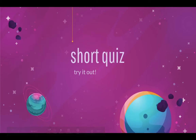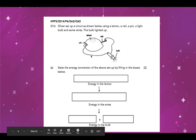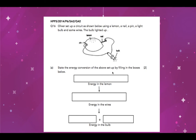Here's a short quiz. Oliver set up a circuit using a lemon, a needle, a pin, a light bulb, and some wires. The bulb lighted up. State the energy conversion of what happened. The bulb lighting up indicates that there is electrical energy present. Since there is no battery supplying the electric current, the lemon is acting as an electrical source. Lemon is a food, so it has chemical potential energy. The chemical potential energy of the lemon is being converted to electrical energy, which passes through the wires and then produces light and heat energy in the bulb.